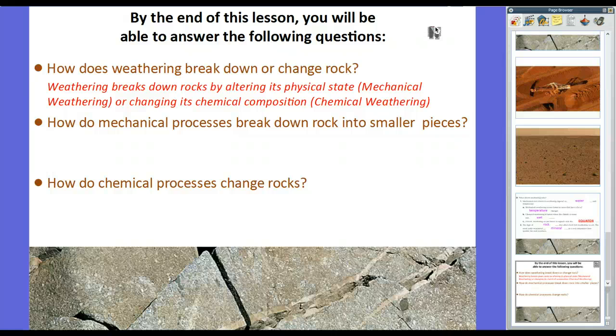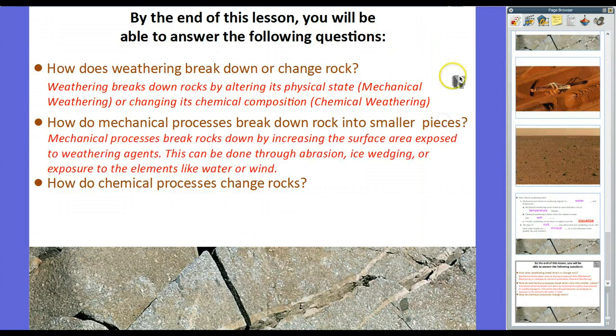Now, how do mechanical processes break down rock into smaller pieces? Well, mechanical processes break rocks down by increasing the surface area exposed to weathering agents. This can be done through abrasion. That's when friction or impact getting hit by something breaks rocks down. Ice wedging, that's when water freezes and melts really quickly. And it slowly pulls the rock apart, or exposure to the elements like water and wind. And in addition, plants, the roots, growth of roots can break, much like ice wedging. And even animals, like in Louisiana, the Nutria Rat causes mechanical weathering.